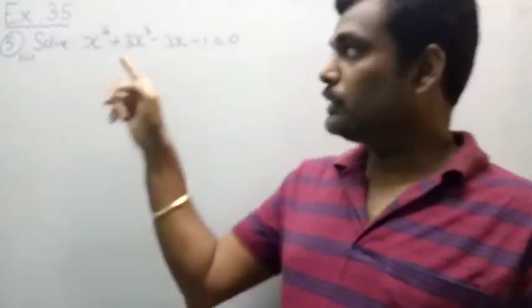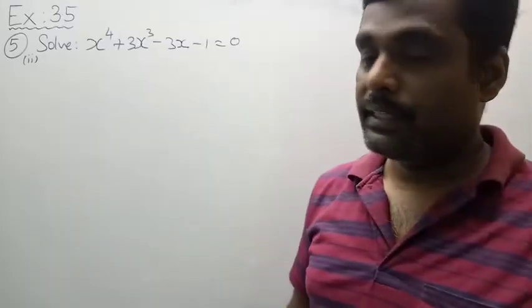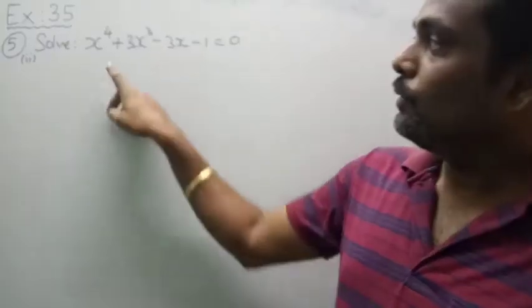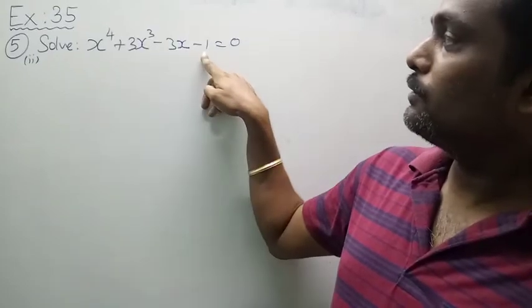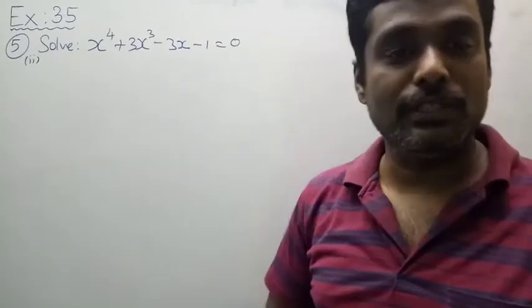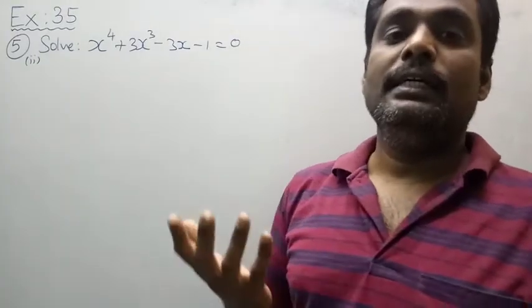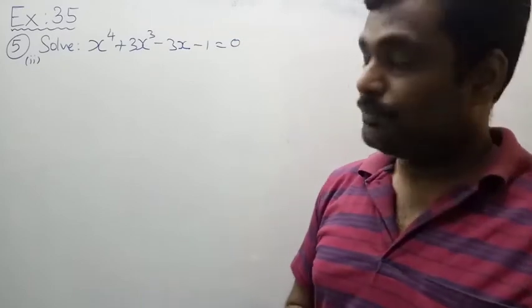It is a fourth degree polynomial. First, we will verify whether the sum of the coefficients is 0. 1 + 3 + 0 - 3 - 1 = 0. So the sum of the coefficients is 0. Therefore, x - 1 is a factor.